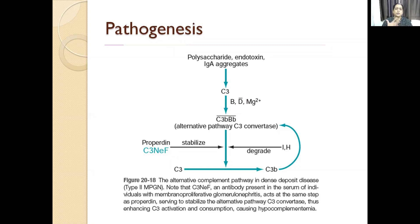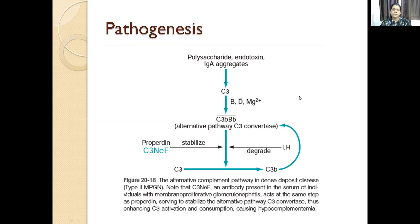In dense deposit disease, C3 and properdin get deposited in the glomerular basement membrane, but C4 and others are normal. C3 gets decreased. In the alternate complement pathway — if you remember the inflammation chapter — whenever there are endotoxins and bacterial lipopolysaccharides, they cleave C3 directly and then there is formation of the C3b fragment.